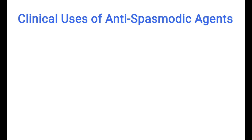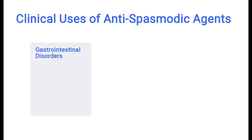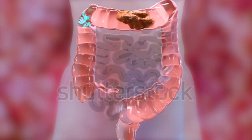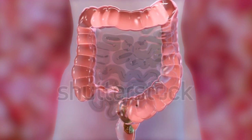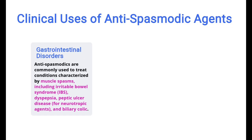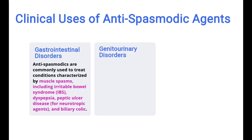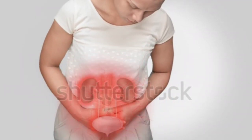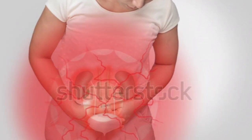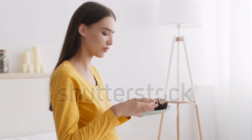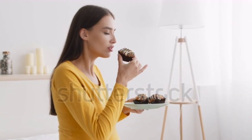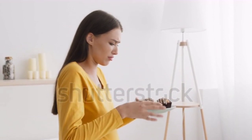Let's understand the clinical uses of antispasmodic agents. First, gastrointestinal disorders: antispasmodics are used to treat conditions including irritable bowel syndrome (IBS), dyspepsia, peptic ulcer disease for neurotropic agents, and biliary colic. Second, genitourinary disorders: antispasmodics such as oxybutynin provide spasm relief in the genitourinary tract, including overactive bladder and ureteric colic. Third, motion sickness and post-operative nausea: neurotropic antispasmodics such as scopolamine are used for motion sickness and post-operative nausea.